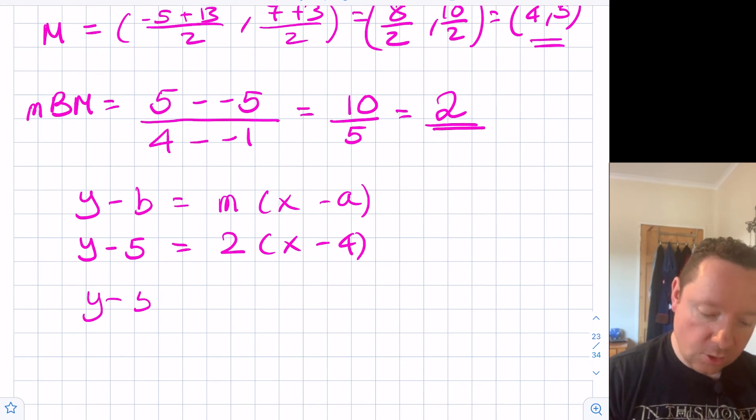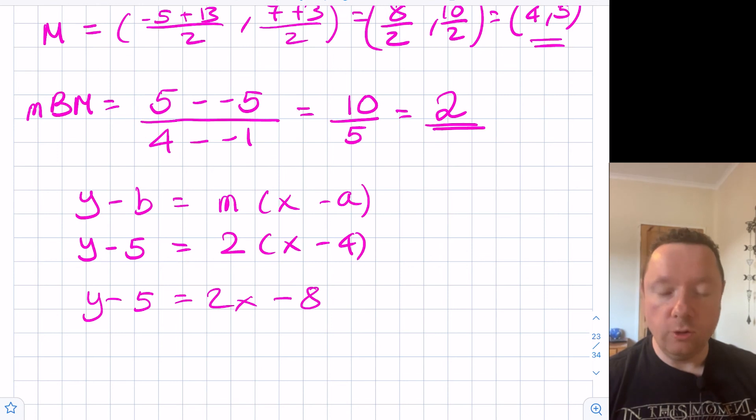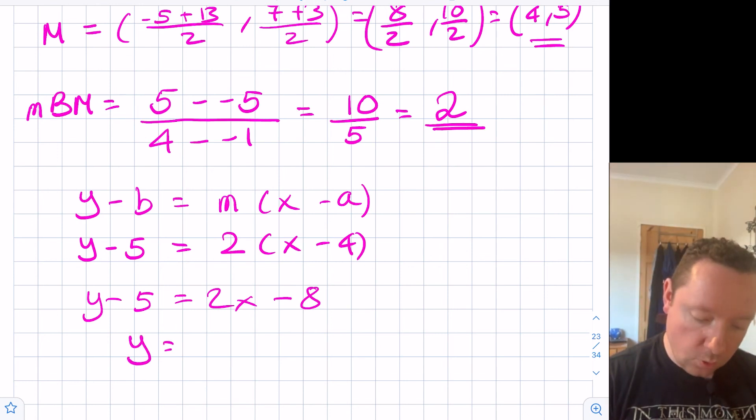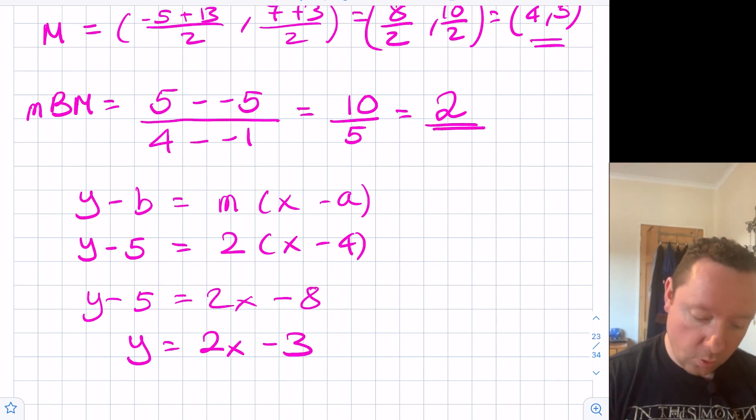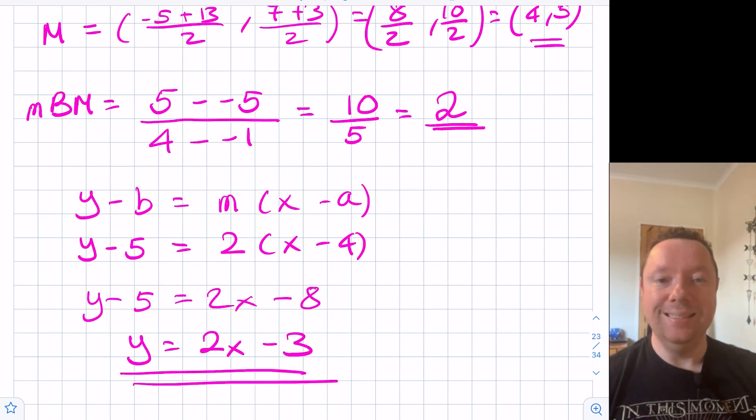y minus 5 then is 2x minus 8. Or to put it in the normal straight line format, y equals 2x minus 8 plus 5 is minus 3. We've now got the equation of our median and we're done.